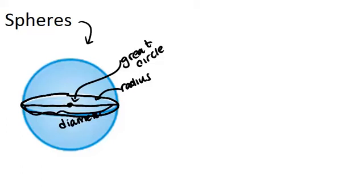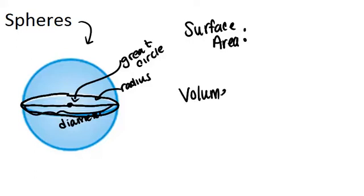Now two things that you want to know how to figure out about a sphere are its surface area and its volume. The formulas for both surface area and volume require calculus in order to derive them. So for right now we're mostly just going to focus on using those formulas correctly.